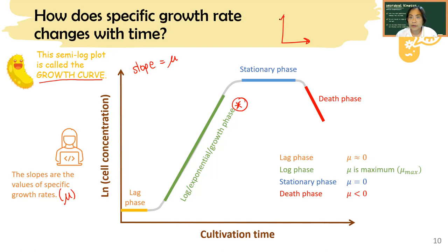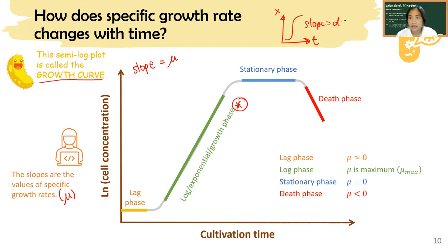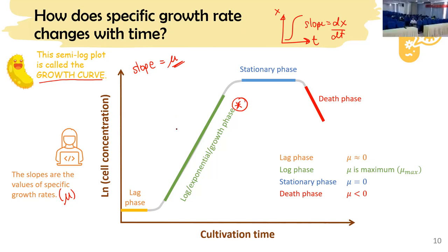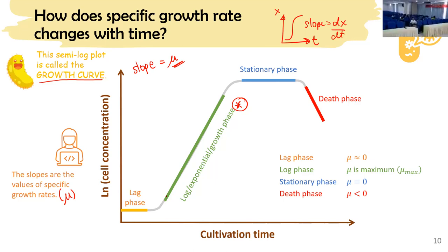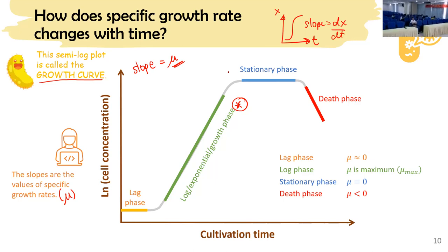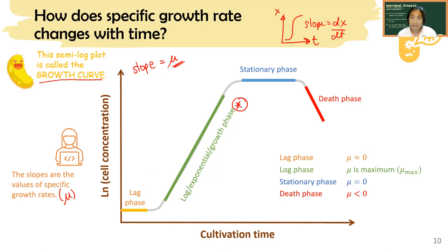If you plot just x versus t and make the slope dx/dt, they are not the same. The slope on the semi-log plot is μ, but the slope on the linear growth profile is dx/dt. The growth curve presents whatever happens when there is nothing else affecting the growth except the food — the substrate. The main parts of the growth curve consist of four main parts in a typical growth curve.